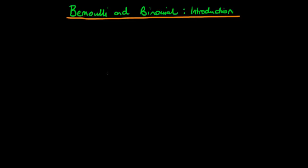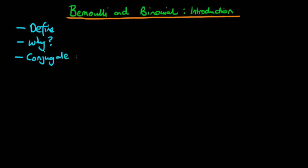In this video I want to provide an introduction to the Bernoulli and binomial distributions. We're going to start off by defining the Bernoulli and then introduce the binomial a bit later on. We're also going to talk about why we might want to use each of these distributions, and finally we'll talk about the conjugate prior to each of these distributions, which in both cases happens to be a beta distribution.